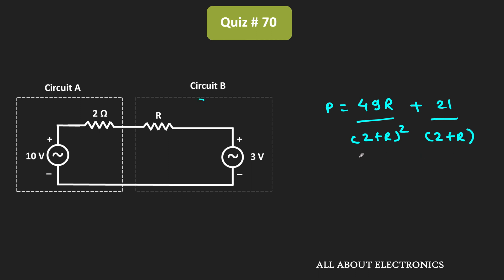This power P is the power transferred from circuit A to circuit B. We have been asked to find the value of R such that this power transfer is maximum. To find that, we differentiate this power with respect to R and equate it to zero.